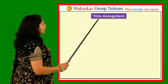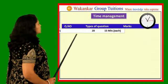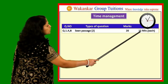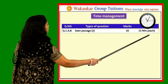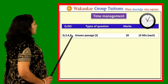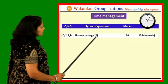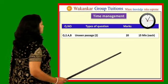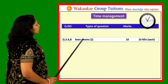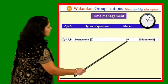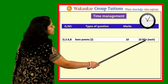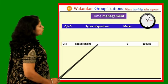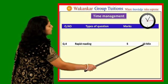Now let us see time management. Question 1A and B: there are two seen passages of 20 marks; you should complete in 15 minutes each. Question 2A and B: there are two unseen passages of 20 marks; you should complete in 15 minutes each. Question 3A and B: there are two seen poems of 10 marks; you should complete in 10 minutes each. Question 4 is the rapid reading section, which is of 5 marks; you should complete in 10 minutes.